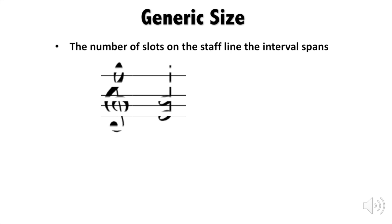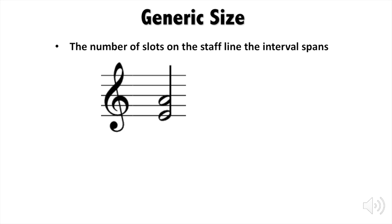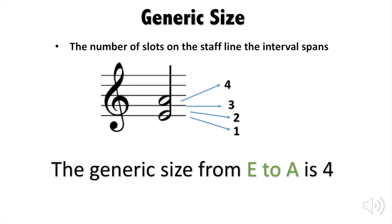For example, here I have E and A. To find its generic size, all we need to do is count the number of slots this interval spans on the staff line. So counting from E, I have 1, 2, 3, 4 slots. So the generic size from E to A is 4.